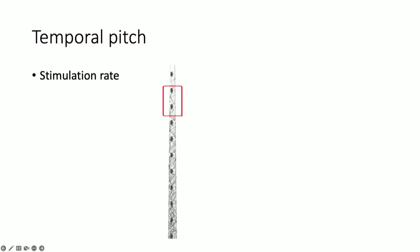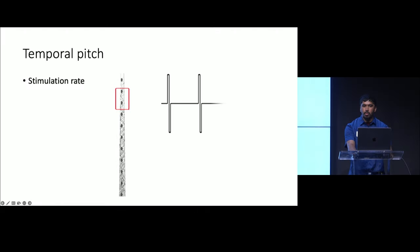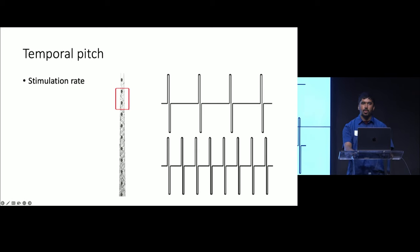In addition to coding pitch by the place of stimulation, pitch can also be coded by the stimulation rate in a cochlear implant. Looking at a given electrode channel, we could present a low-frequency pulse train and a high-frequency pulse train, where the high-frequency pulse train would be perceived as being higher in pitch.